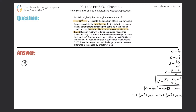Conversely, if any of the variables in the denominator change — for example, if viscosity goes up — then Q will go down by the same factor. So if viscosity increases two times, then Q will be halved.